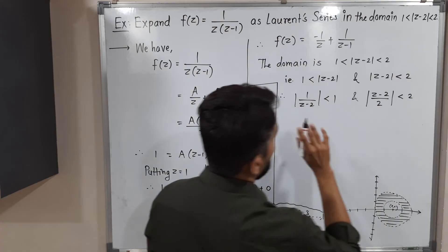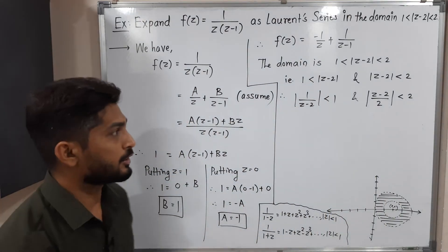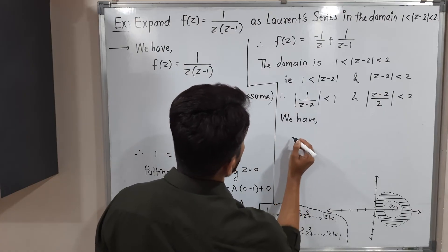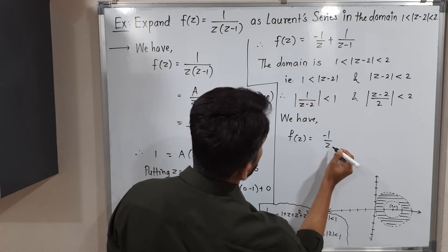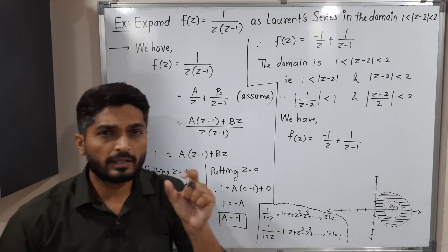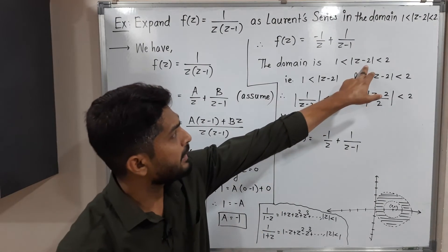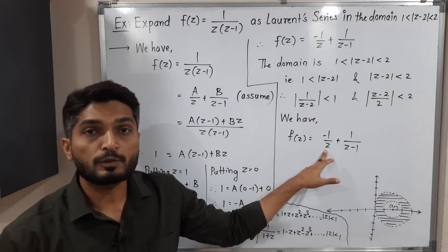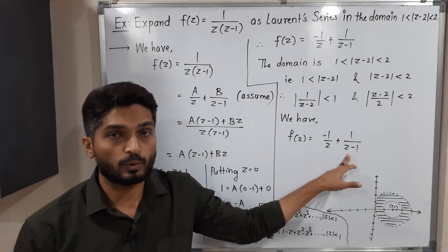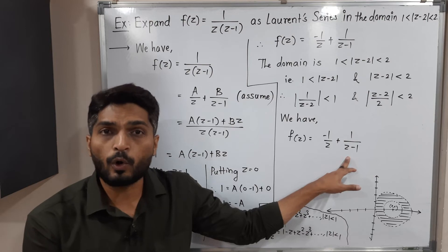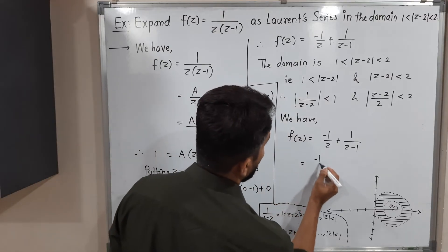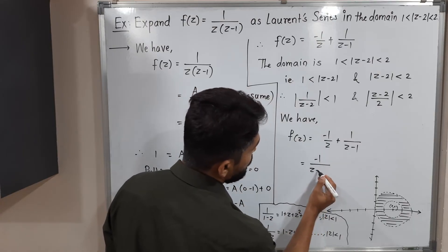We have f(z) = -1/z + 1/(z-1). We need to rewrite each term so that (z-2) appears inside, matching our domain condition. For -1/z: we write z = (z-2) + 2. For 1/(z-1): we write z-1 = (z-2) + 1, since (z-2)+1 = z-1. Both terms now contain (z-2) as required.